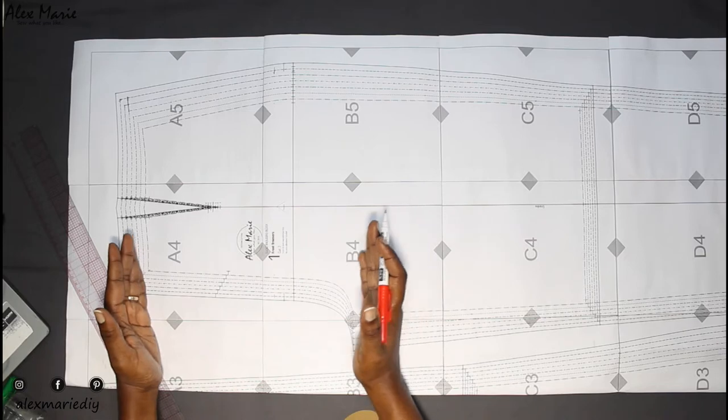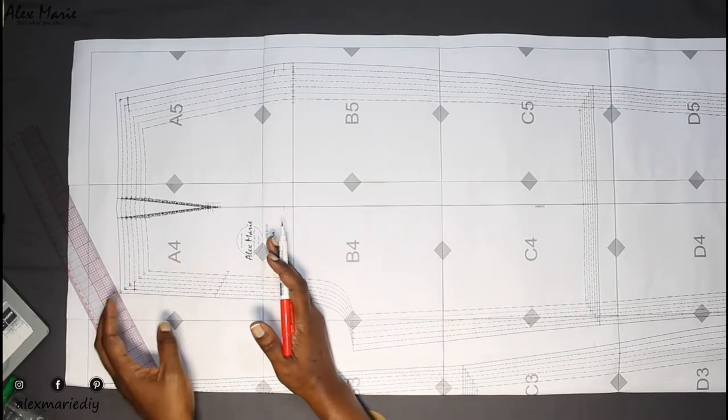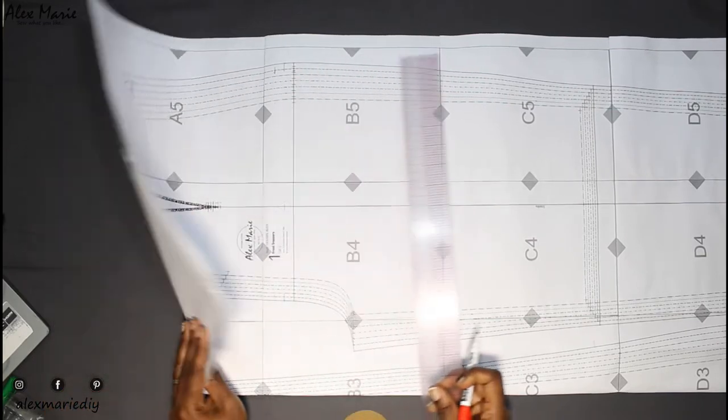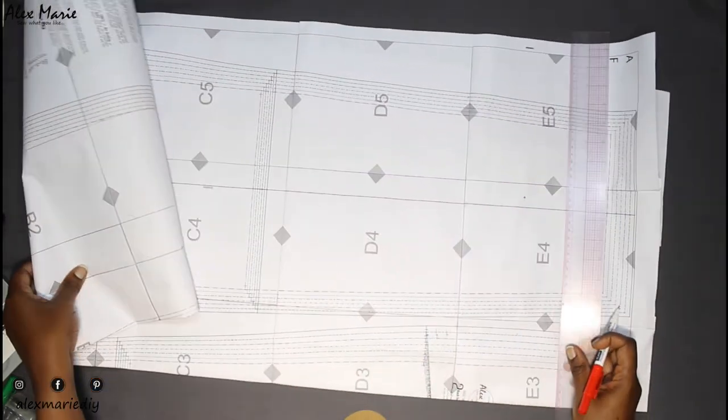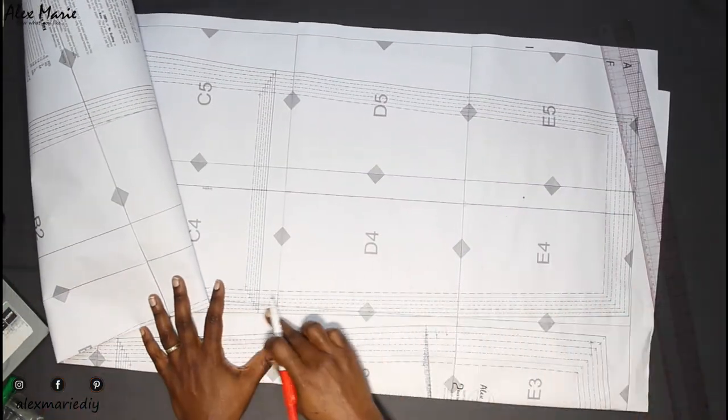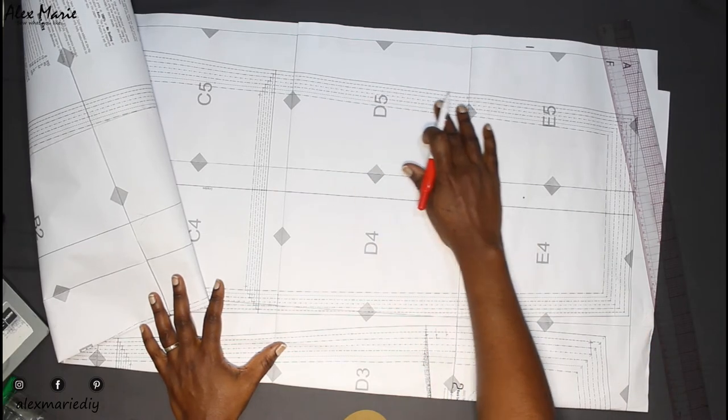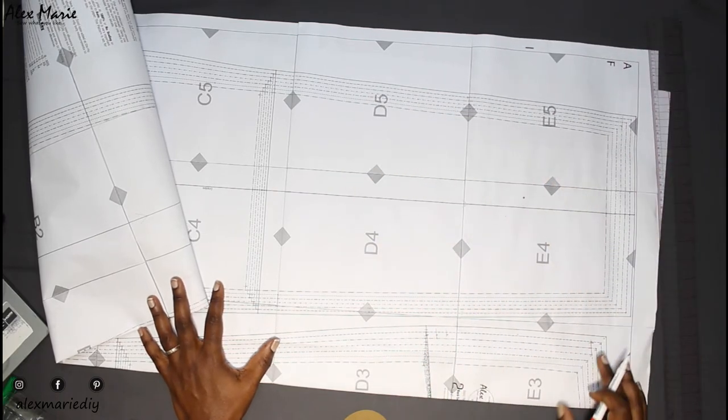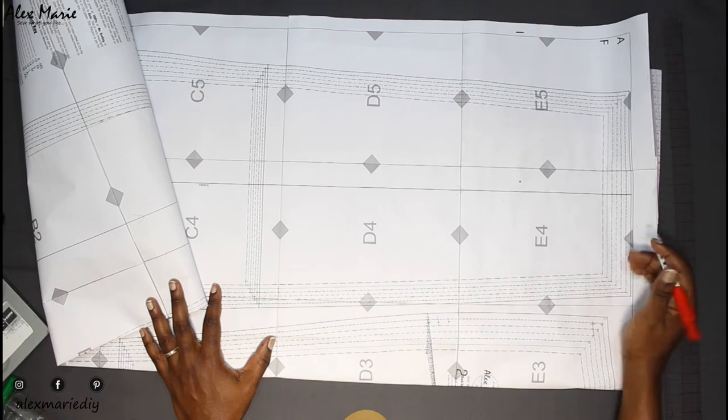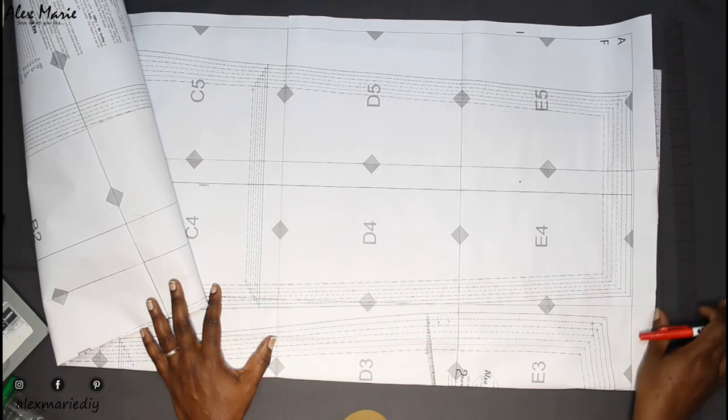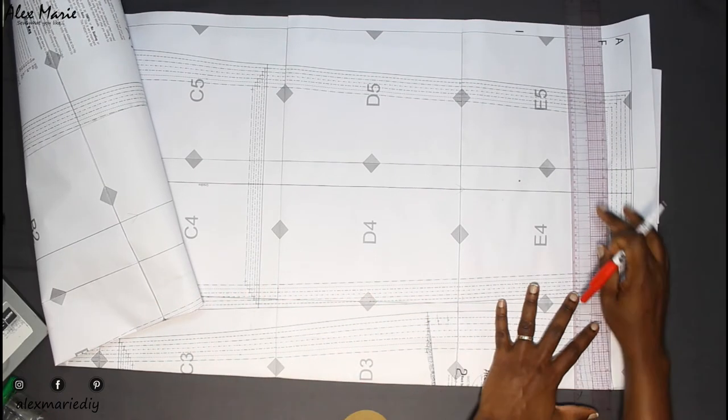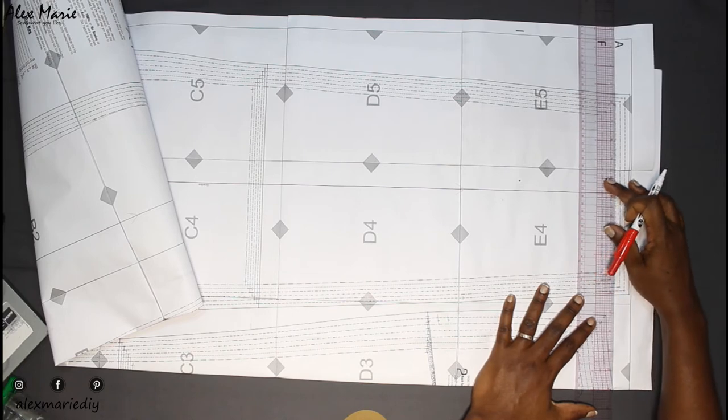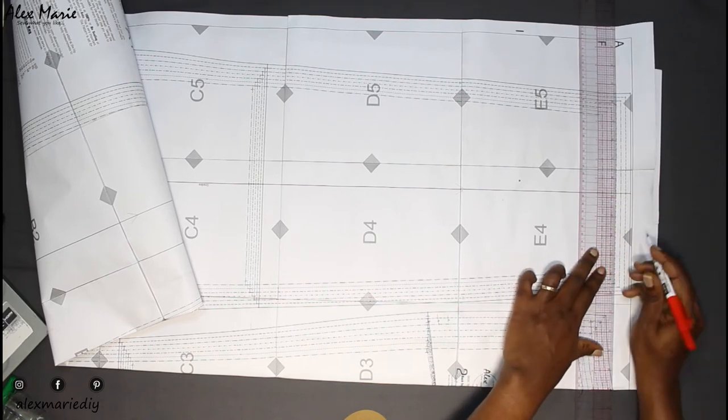And then I will simply trace from the 18 line all the way down. And that's it because essentially all I've done is shorten the crotch depth. Don't worry about the hip depth. Once you've shortened the crotch depth, the hip depth has also been shortened. And following down, I will trace all the way following the 18 leg since that is what I have widened the trouser to.